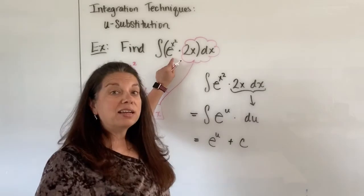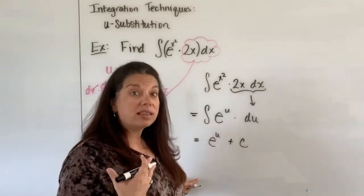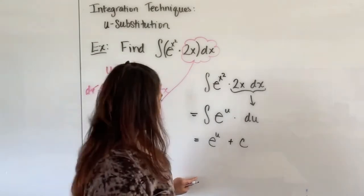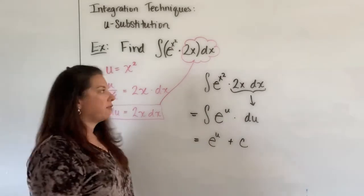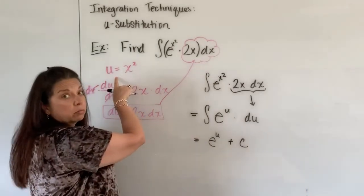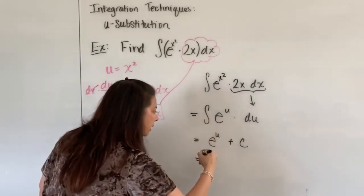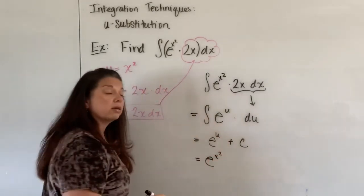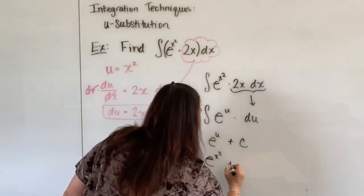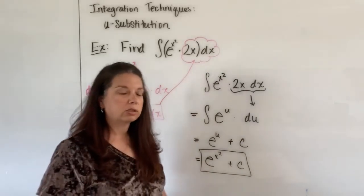So we're not yet done because we have to exchange back out again the u that I have here. As a reminder, we know u is x squared, we made that happen, so let's put that back in here. So instead of u, put back in our x squared, so we have e to the x squared plus c, and now I'm ready to box this as my actual answer.